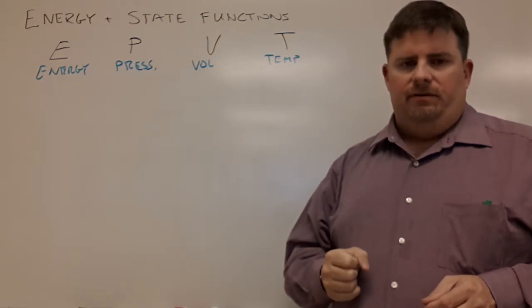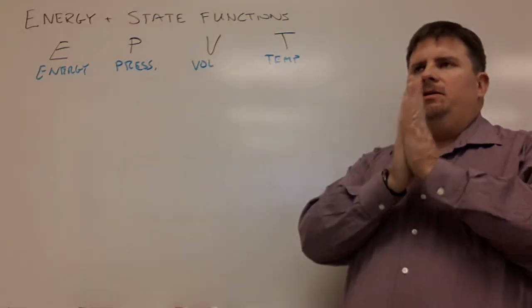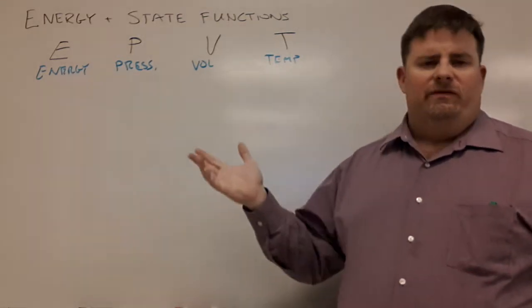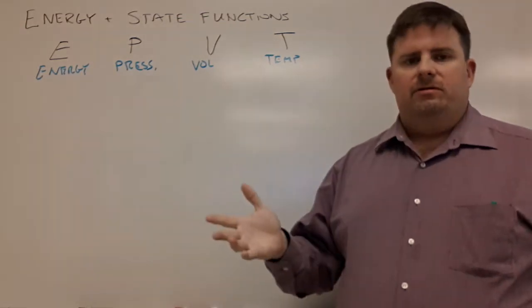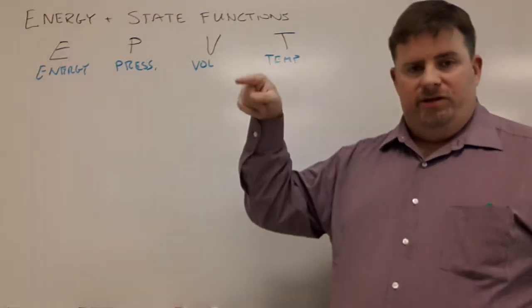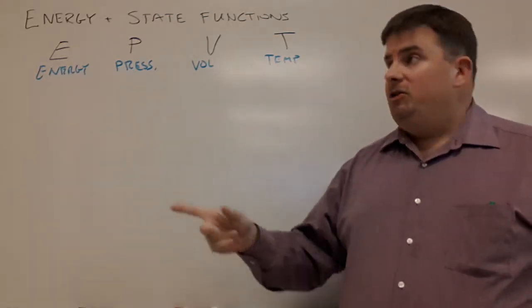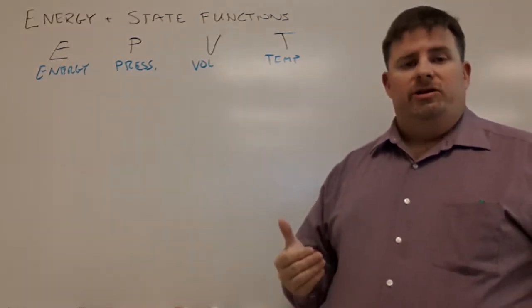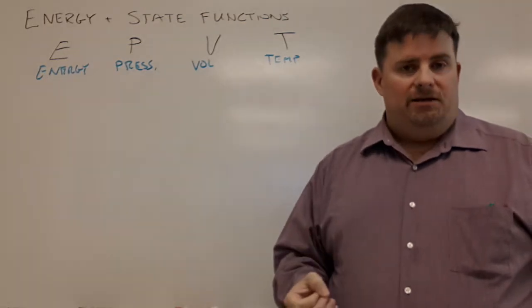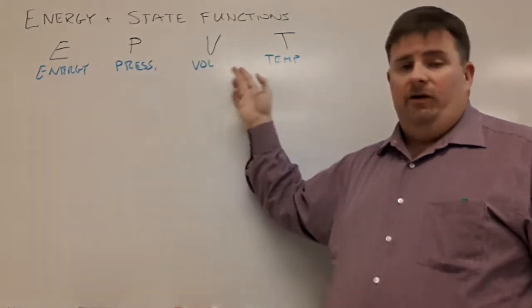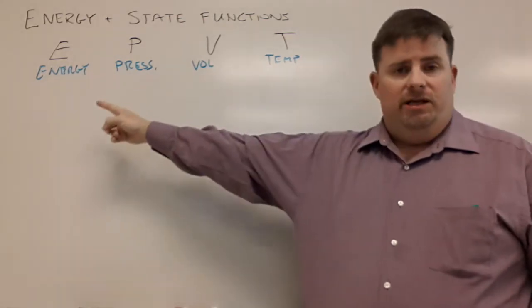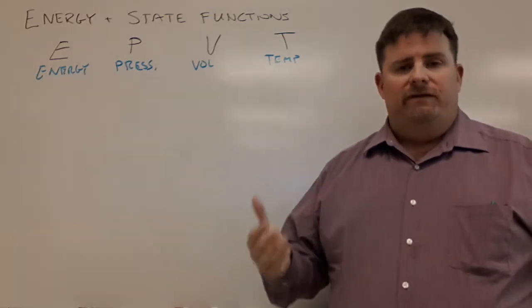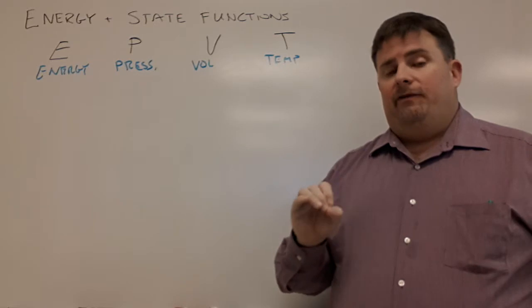Some books use an example of a guy going up a mountain or a flight of stairs. If a guy goes from the first floor to the second floor, he's changed the internal energy of the system. By going up the stairs he's increased the amount of potential energy, so we've had a change of state. That's why these things are called state functions.